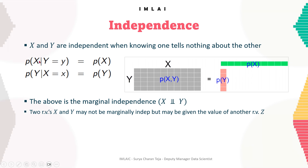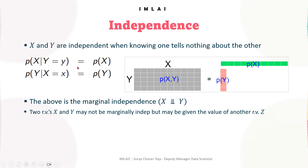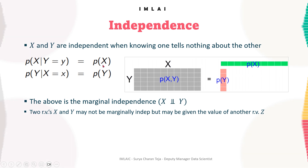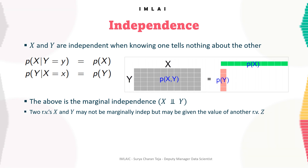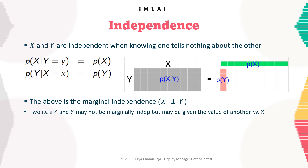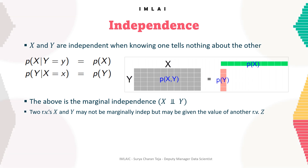This is how we represent it: the probability of X given Y equals some value y — this marginal probability of X — is equal to P(X). Irrespective of what the value of Y is, the probability of X remains the same. It doesn't depend on the probability of Y. That's why we call them independent random variables.